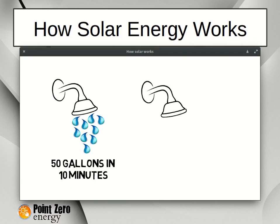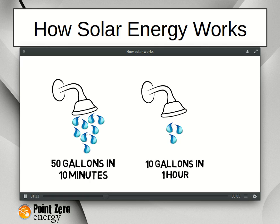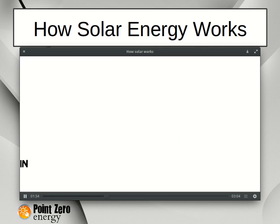However, we want to use 50 gallons in 10 minutes, and the spring is only producing 10 gallons in one hour. So although the spring will produce enough water for us in a 24-hour period, it doesn't flow enough water for our daily shower needs. Also, we have the problem that the spring only produces water for 10 hours a day — what if we want to take a shower when the spring is not flowing?